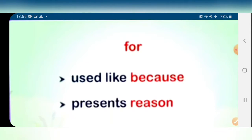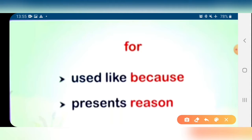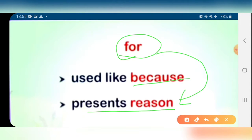One by one we will read, because there are some examples. The conjunctions are: and, but, for, because, so, as, or. First we are going to read 'for'. We use 'for' like 'because' — it presents the reason.